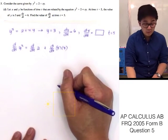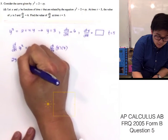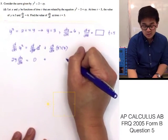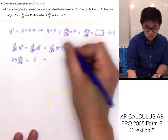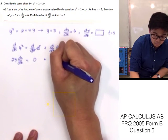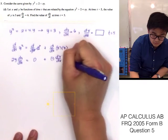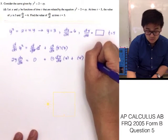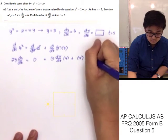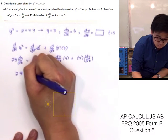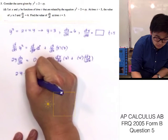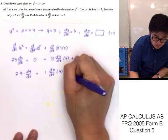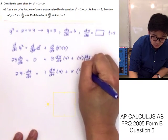The derivative of y squared with respect to t is 2y dy/dt, and the derivative of the constant is 0. For the xy term we use the product rule: derivative of x is dx/dt times y, plus x times dy/dt. So our equation becomes 2y dy/dt equals y dx/dt plus x dy/dt.